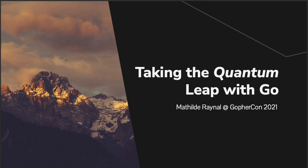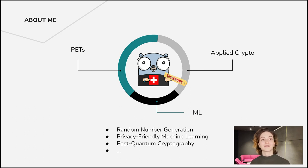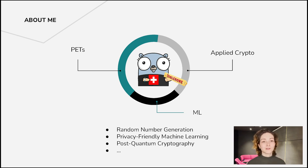Hi everyone, my name is Mathilde and I am super happy to be here and to welcome you to my presentation, taking the quantum leap with gold. Before we start, just a quick one about me. I am currently a PhD student living in Switzerland, which is why you'll see pictures about the Alps and the mountains throughout the slides. My research interests range through many applications and topics, for example like privacy enhancing technologies or applied cryptography. I also enjoy looking at machine learning when needed. Today we're going to talk about a topic that is very dear to my heart, which is post-quantum cryptography.